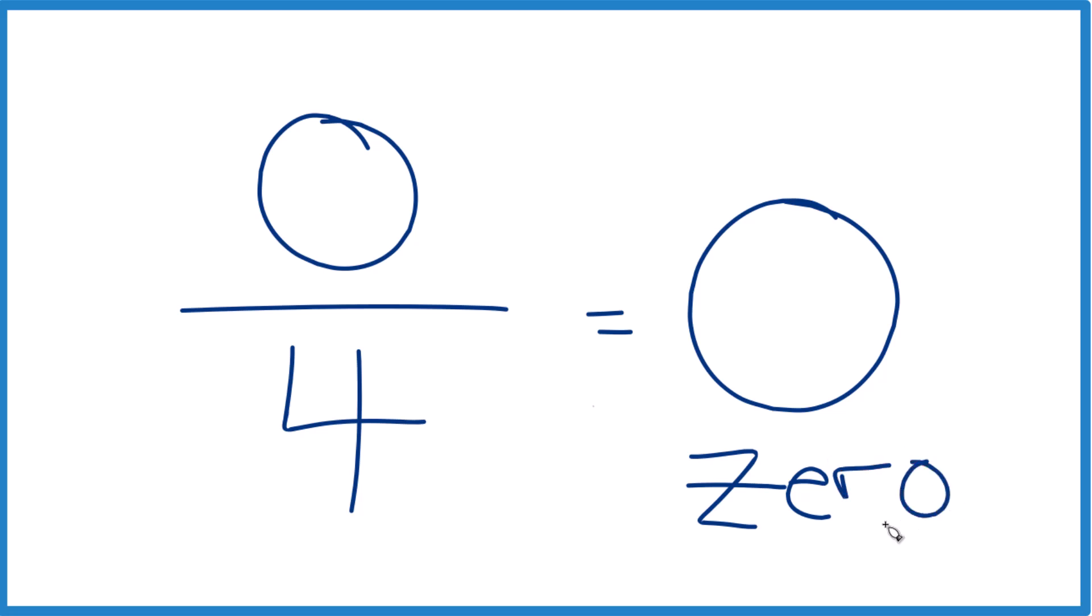So again, 0 divided by any number—4, 5, 1,000—that's going to give us 0, with the exception of 0 divided by 0. That's a little special. This is Dr. B, thanks for watching.